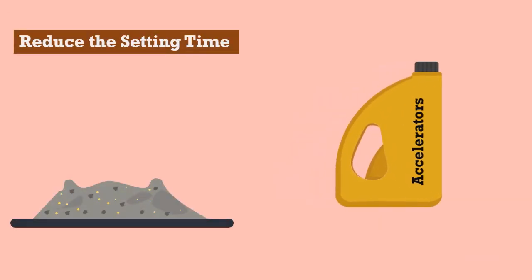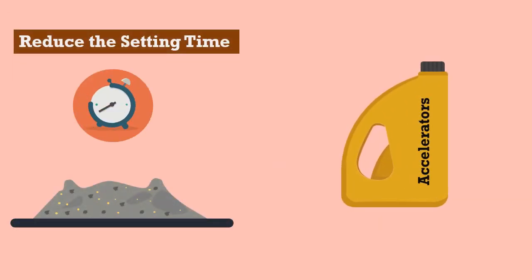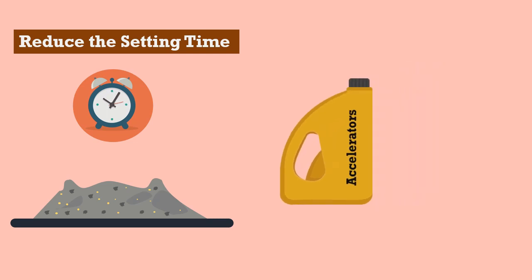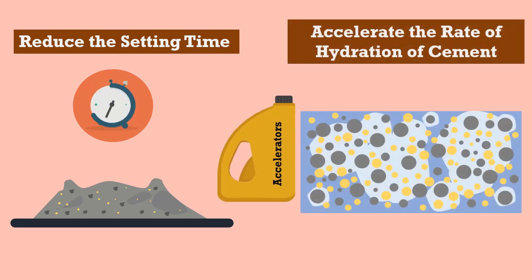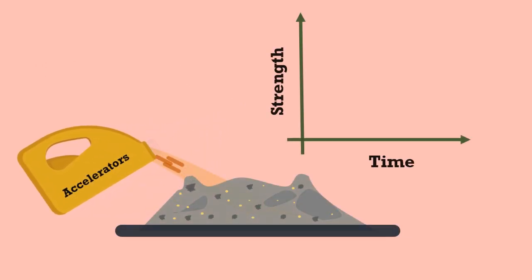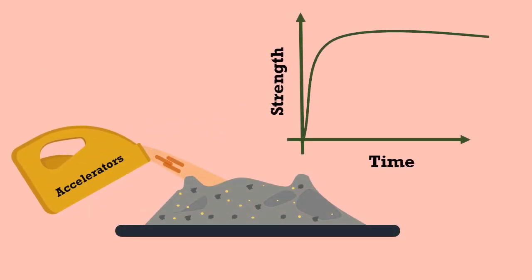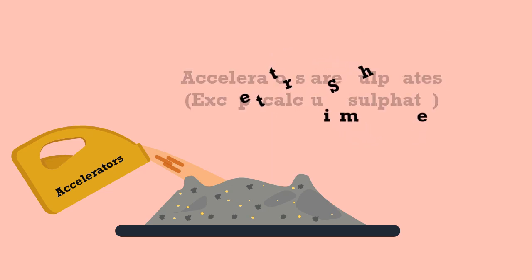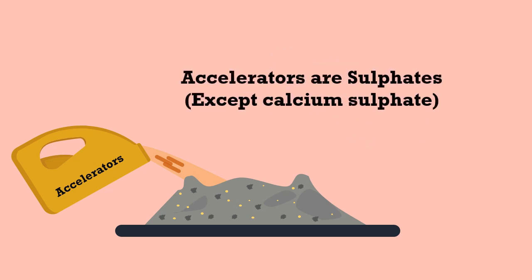Accelerators generally reduce the setting time and accelerate the rate of hydration of cement, thus consequently resulting in an earlier rate of gain of strength. The examples of accelerators are sulfates — with an exception of calcium sulfate — alkali carbonates, aluminates and silicates.